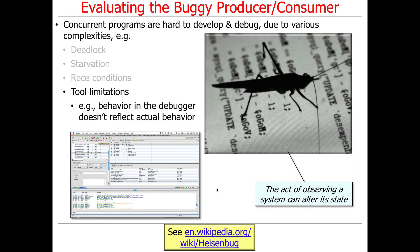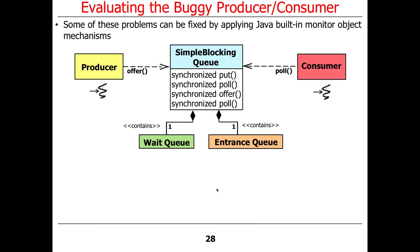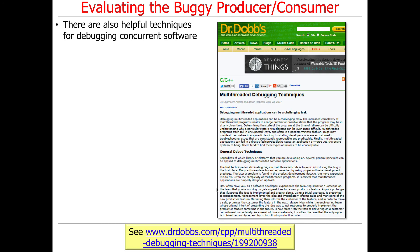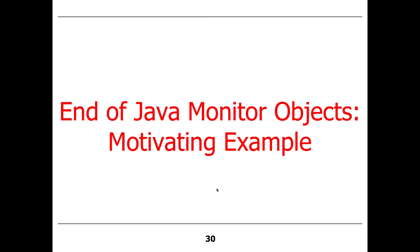There are also problems with tooling. Whenever you have concurrent programs, it's very hard to debug them because the bugs in your code will occur differently when run in the debugger than when not, because the order of execution or rate at which things run gets modified. Those are sometimes called Heisenbugs because they change when you start to look at them, like the Heisenberg uncertainty principle. Some of these problems can be fixed by applying monitor objects, which have the condition and the entrance queue under the hood. Monitor objects will help you with synchronization and coordination.